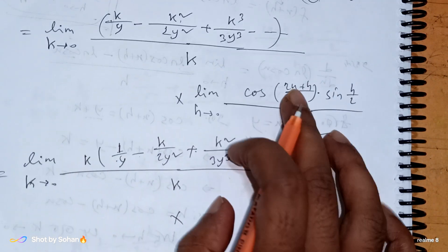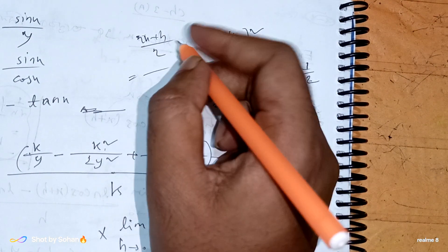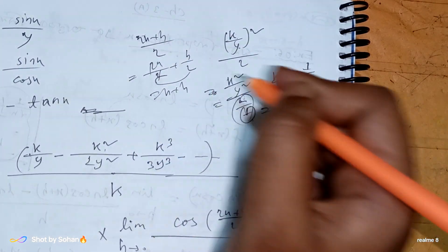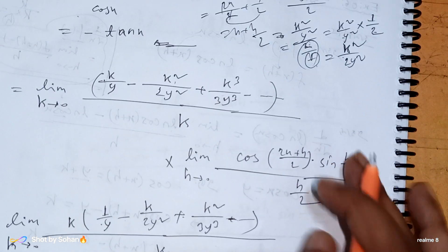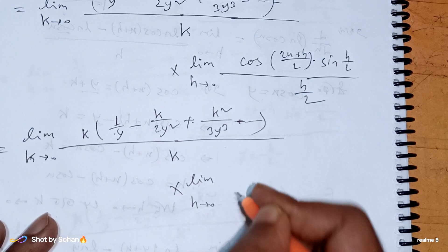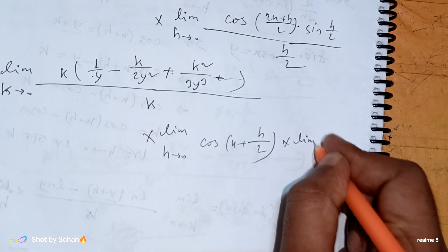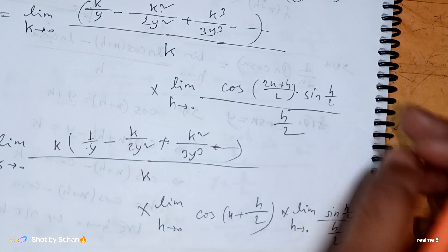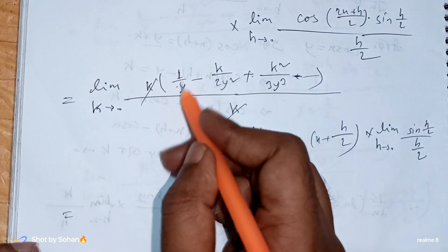We can write 2x plus h by 2 as x plus h by 2. As limit h tends to 0: cos(x plus h/2) tends to cos x. And sin(h/2) divided by (h/2) tends to 1 by the standard limit sin theta by theta tends to 1 as theta tends to 0.